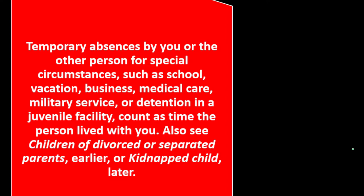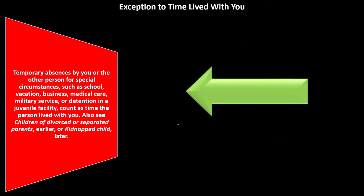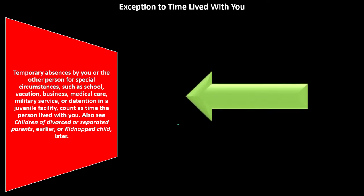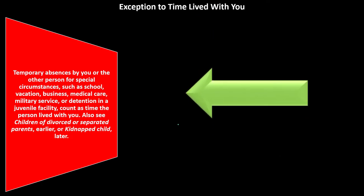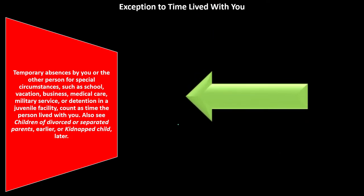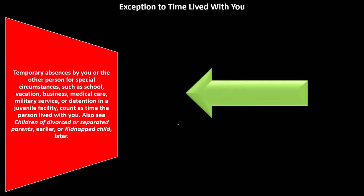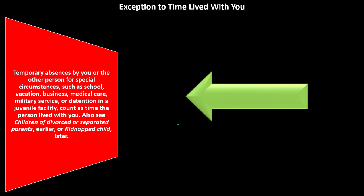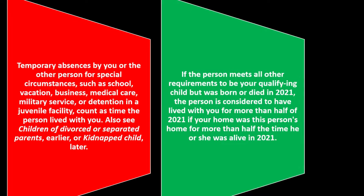Temporary absences by you or the other person for special circumstances — such as school, vacation, business, medical care, military service, or detention in a juvenile facility — count as time the person lived with you. Also see children of divorce or separated parents, or kidnapped child.